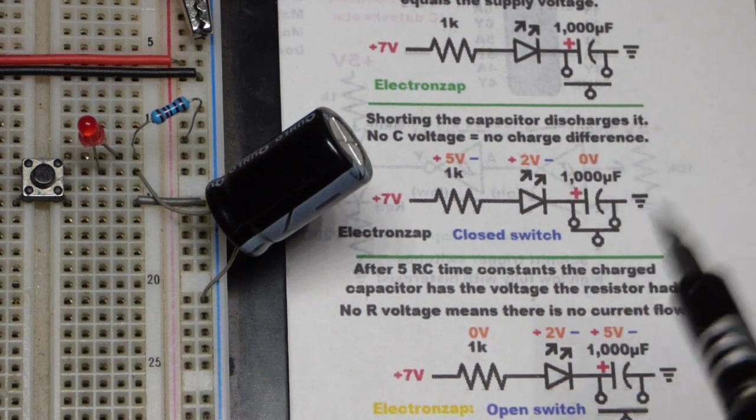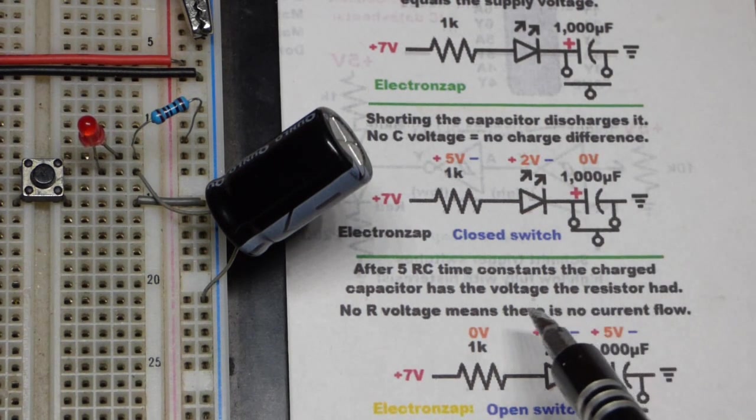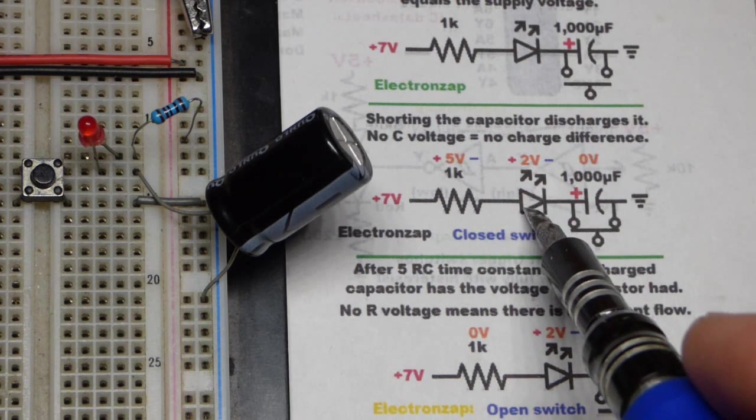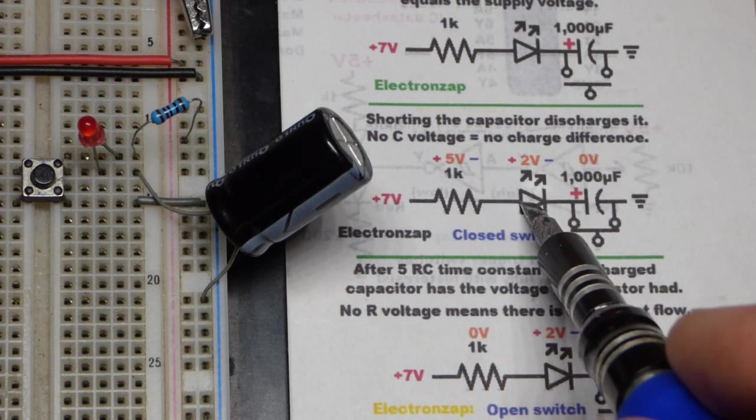So right when we close the switch, the capacitor will instantly discharge. The LED is going to start lighting up because current is going to go through it with the 1000 ohm resistor.